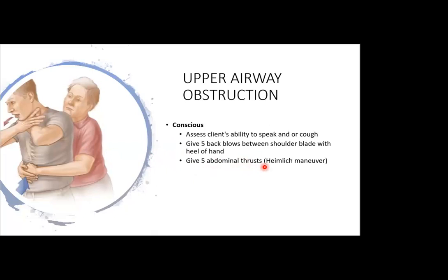Give five abdominal thrusts — the Heimlich maneuver. Place the thumb side of your fist facing the patient's navel, place the other hand above the fist, and perform a backward and upward thrusting movement to push out whatever is causing the obstruction.